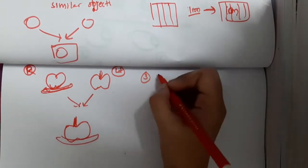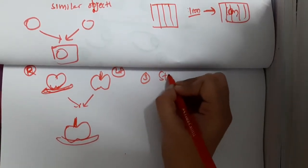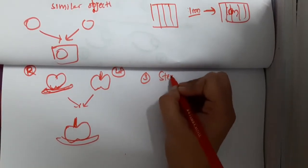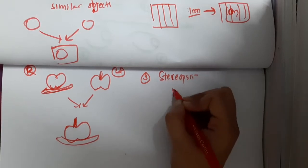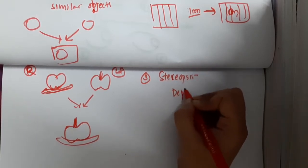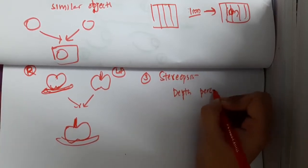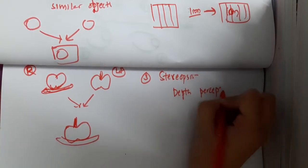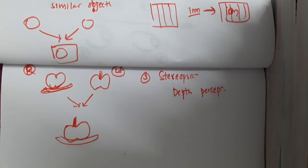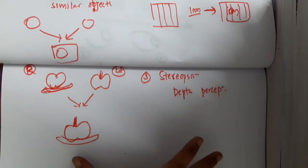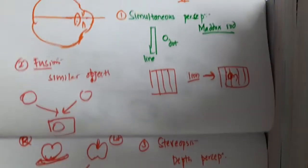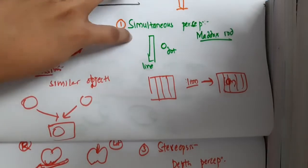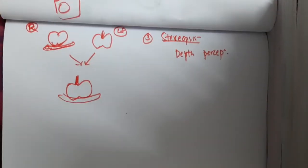The third grade is stereopsis. Stereopsis is actually depth perception. So in binocular vision we have three grades: simultaneous perception, fusion, and stereopsis.